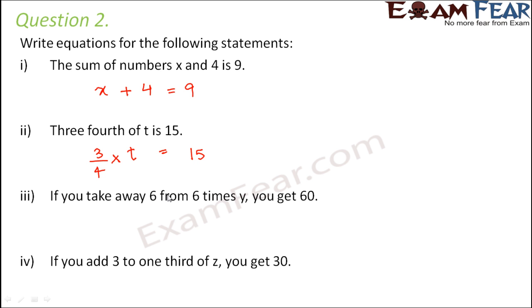If you take away 6 from 6 times y, you get 60. So if you take away 6, that means you are removing 6 from 6 times y. Basically you are subtracting 6 from 6 times y. And what do you get? You get 60.